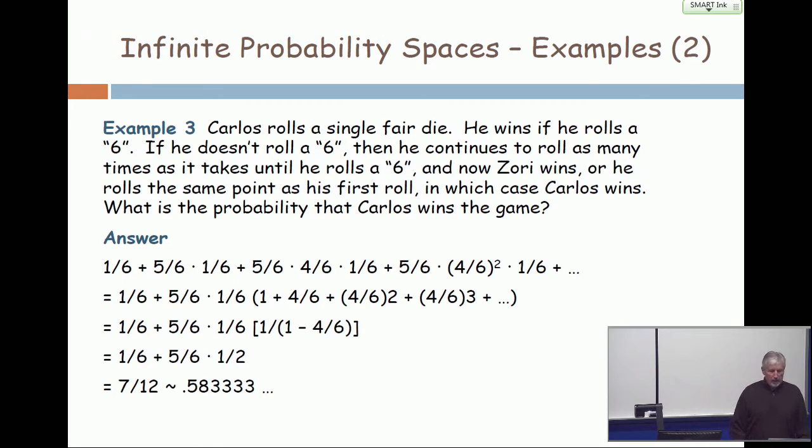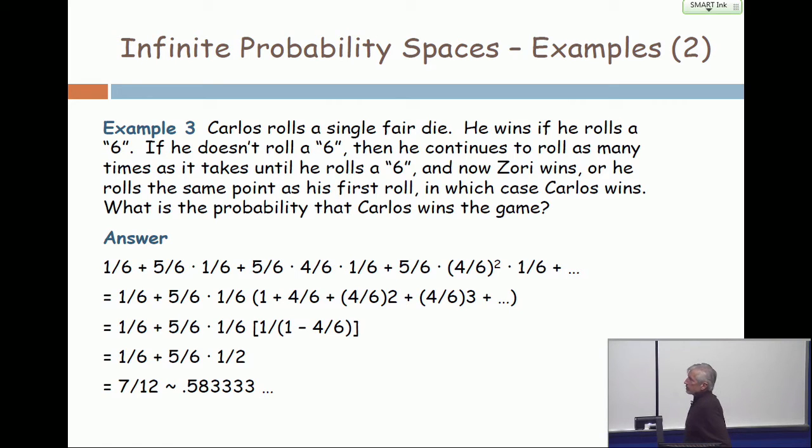Okay. Let's go back to the first example, or one of the early examples. Carlos rolls a single fair die. He wins if he gets a 6. If he doesn't roll a 6, then he continues to roll as many times as it takes until he gets a 6, and now he loses. Or he rolls the same point as his first roll, in which case he wins. What's the probability that Carlos wins the game?